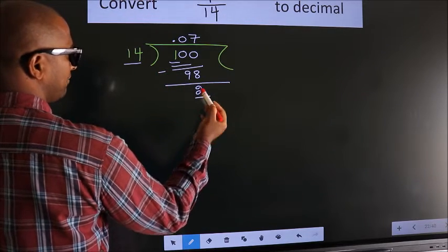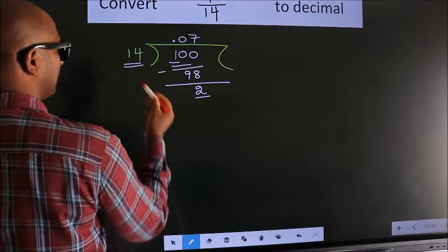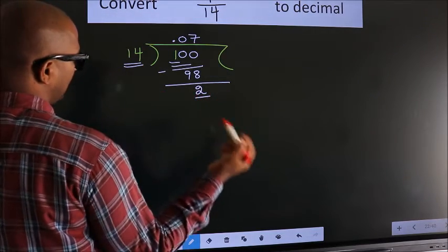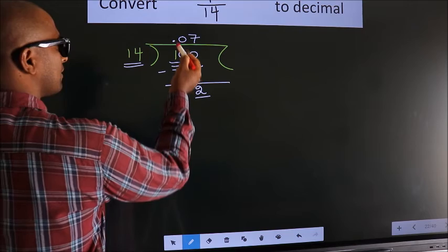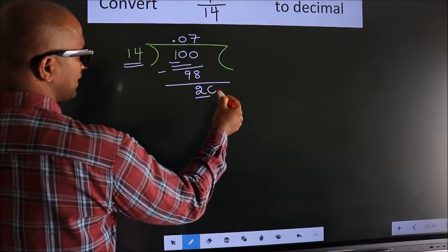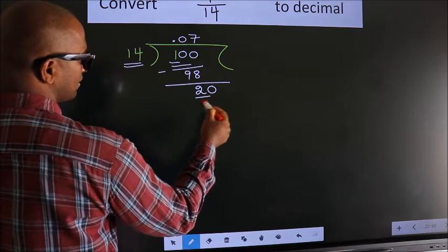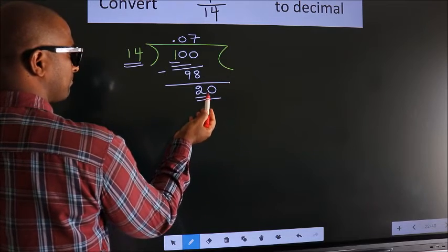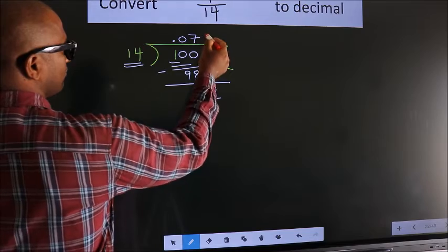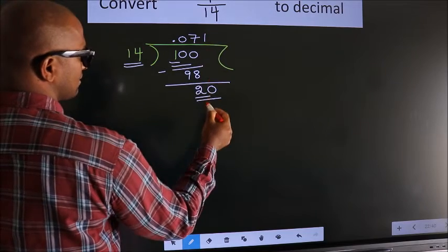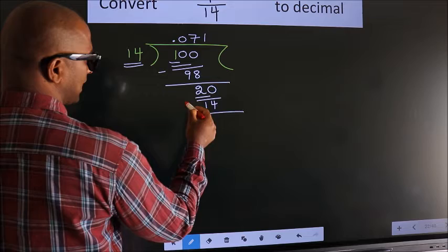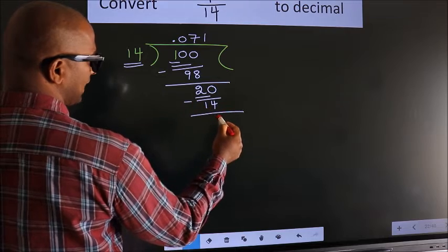Here we have 2, here 14. 2 is smaller than 14, and we already have the decimal, so we can directly take 0. So 20. A number close to 20 in the 14 table is 14 ones, 14. Now we subtract and we get 6.